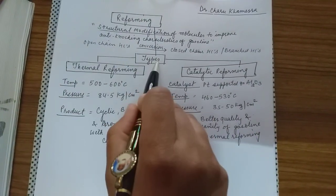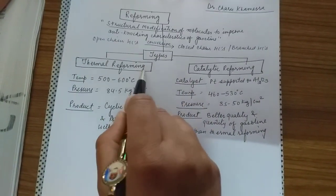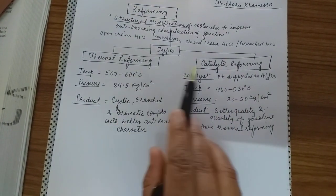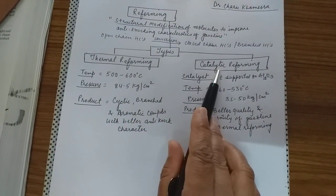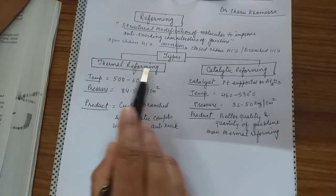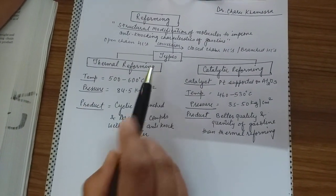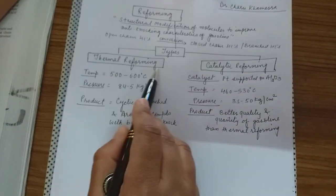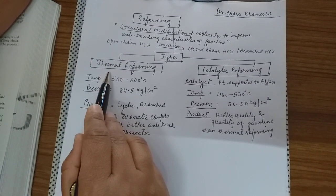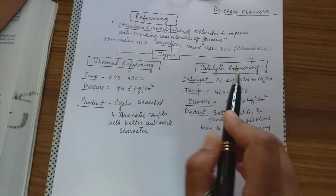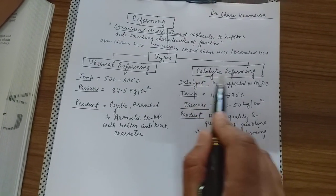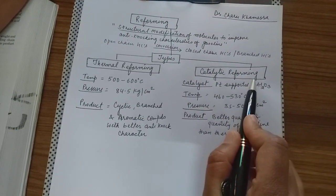Reforming is of two types: thermal reforming and catalytic reforming. The reforming which is carried out in the presence of temperature is called thermal reforming, while the reforming carried out in the presence of a catalyst is called catalytic reforming.